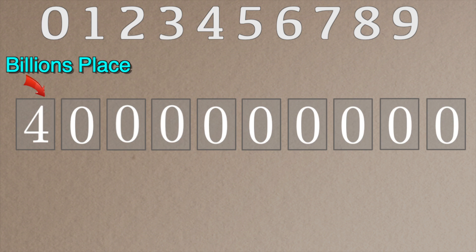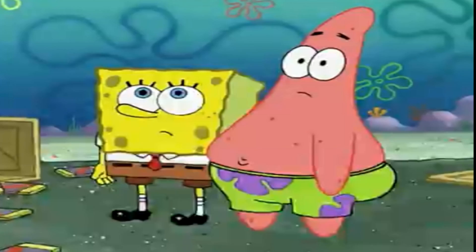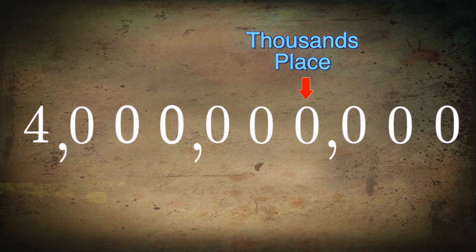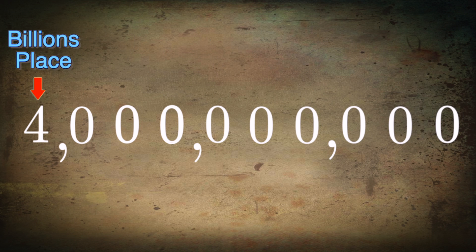Just imagine being a chocolate billionaire! Now, these number places can be hard to keep track of, particularly with large numbers. So what we use is a comma to separate each group of three digits. This makes it much easier to recognize the thousands place, the millions place, or even the billions place.